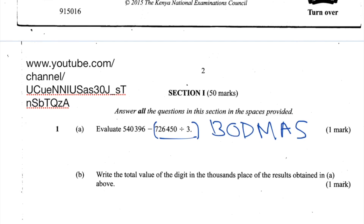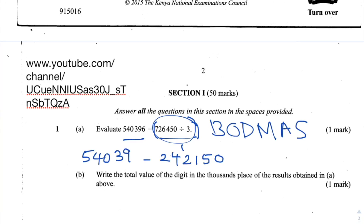I would always do this in stages. Divide 726,450 by 3 first, and then subtract that answer from the other number. You can put them into the calculator at the same time, but remember to put brackets around the division part. 726,450 divided by 3 gives 242,150. Subtracting that from 540,396 gives 298,246. That's the answer to question 1a.